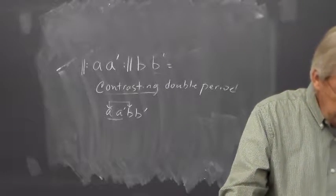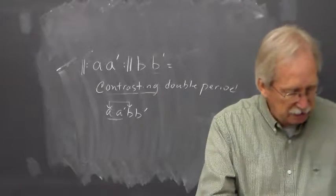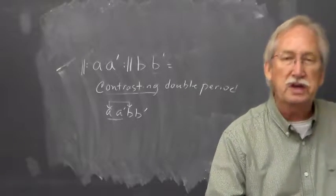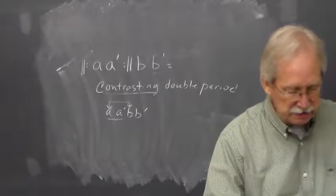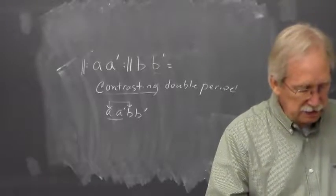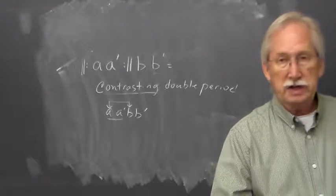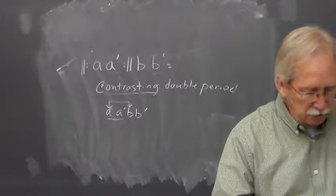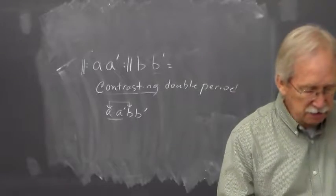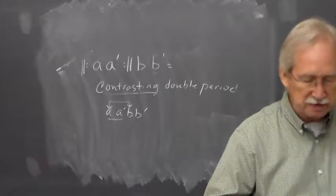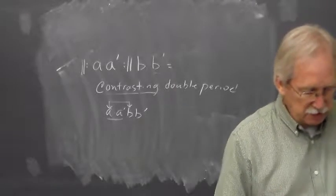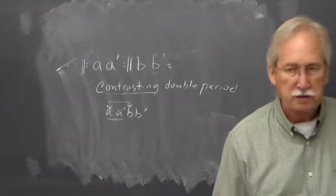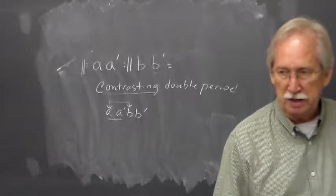Number 20 is one that is an allegretto tempo, in three-four. You want to look at this in four-measure phrase lengths, and it is slurred in semi-phrases. So we have two phrases. Real clearly, the beginning of the antecedent is contrasting to the beginning of the consequent. Therefore, this would be a contrasting period.